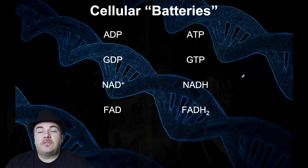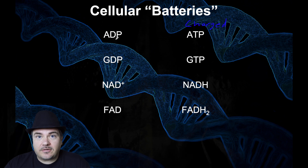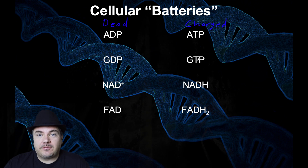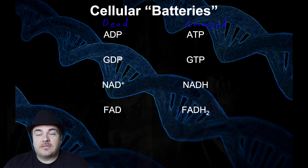Speaking of storing energy, we need to talk about the cellular batteries. One we've already talked about in great detail is ATP — that's a charged up battery, whereas ADP is a dead battery. It turns out your cells have more than one type of battery. Another type works the same way as ATP, though the molecule is a little bit different. That's GTP. GTP has three phosphates, just like ATP has three phosphates. GDP has two phosphates, just like ADP has two phosphates. So GTP is a charged up battery and GDP is a dead battery, just like ATP is a charged up battery and ADP is a dead battery.